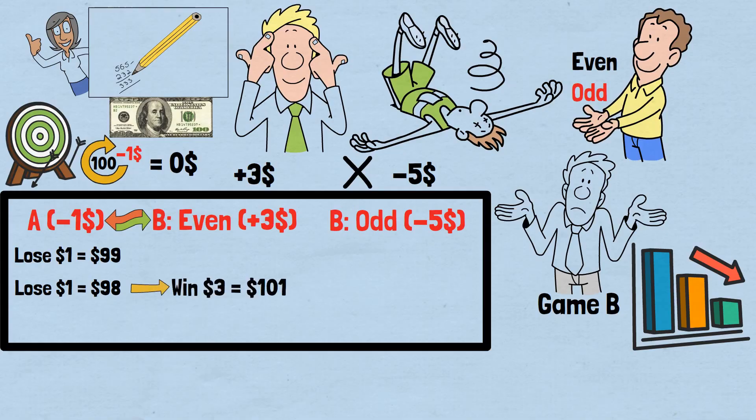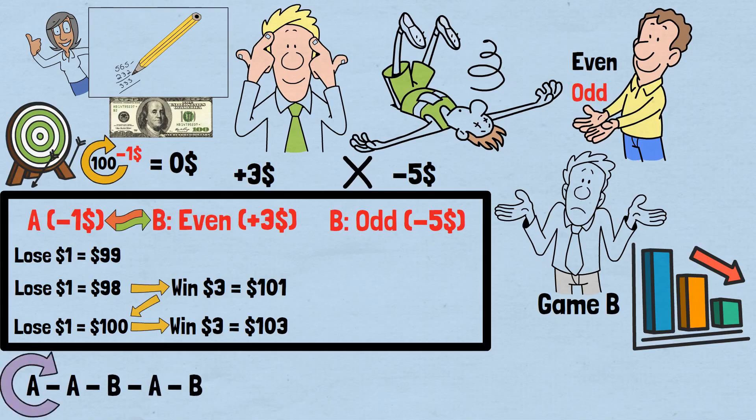Six: play Game A, lose $1, now have $100, even number. Seven: play Game B, win $3, now have $103, odd number. By cycling through A-A-B-A-B, you can repeat this pattern indefinitely, gaining money each cycle despite playing two games that individually guarantee losses.